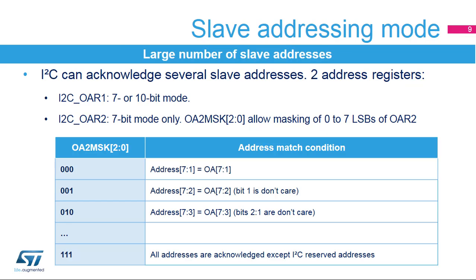The I2C slave can acknowledge several slave addresses, which are programmed into two registers. Own Address Register 1 can be programmed with a 7- or 10-bit address. Own Address Register 2 can be programmed with a 7-bit address, but the least significant bits of this address can be masked through the OA2MSK register in order to acknowledge multiple slave addresses. The two Own Address Registers can be enabled simultaneously.